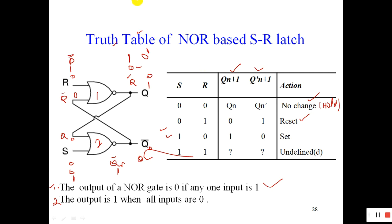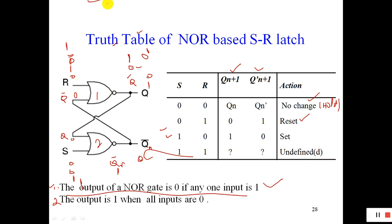Similarly, the last condition: S=1 and R=1. Let's see what will happen. Applying the statement — if any one input of the NOR gate is 1, output will be 0. So with R=1 and S=1, both outputs will be 0. We get Q=0 and Q bar=0.